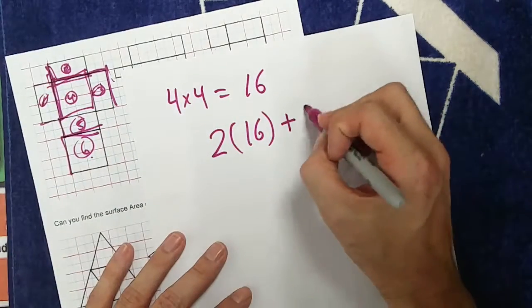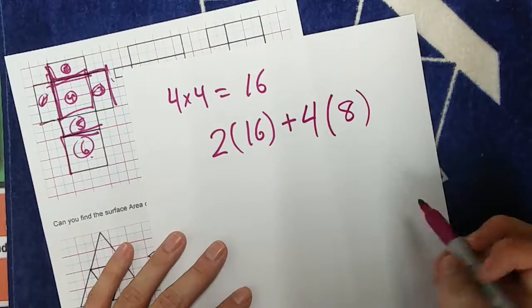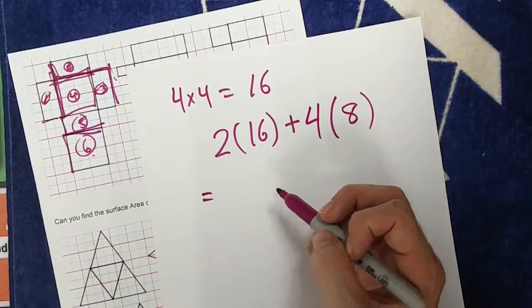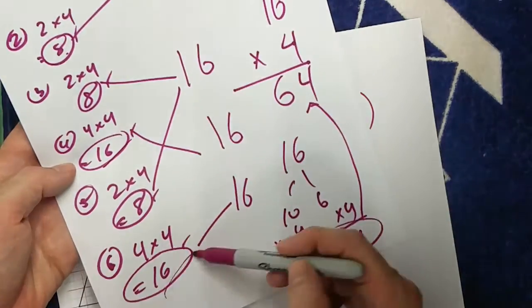I have 4 of them. So I have 4 groups of 2 by 4, which is 8. Well, how much does this add up all together? Well, 2 times 16. That kind of looks similar to this one. 2 groups of 16.